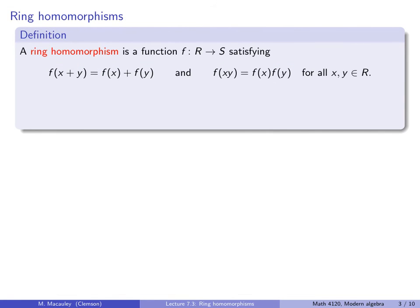Let's start with the definition of a ring homomorphism. A ring homomorphism is a function from a ring R to a ring S satisfying two properties: f(x+y) = f(x)+f(y), and f(xy) = f(x)·f(y) for all x and y in the ring. This just says that f is a structure-preserving map — it preserves the structure of addition and of multiplication. A ring isomorphism is just a homomorphism that is bijective.